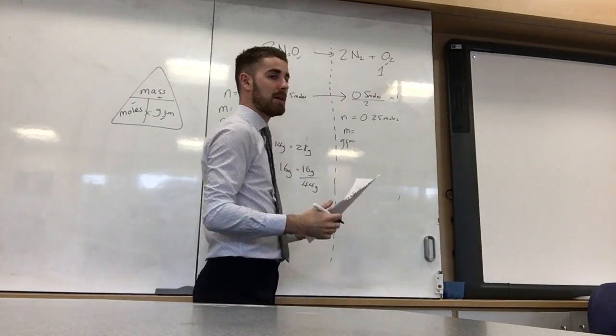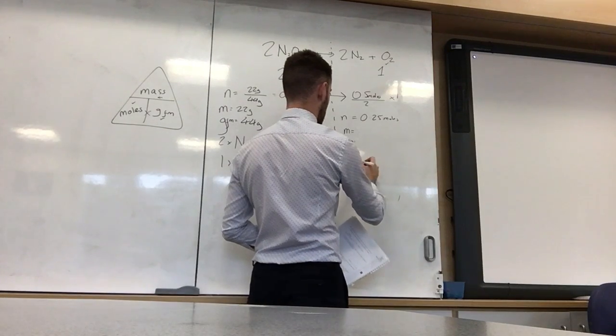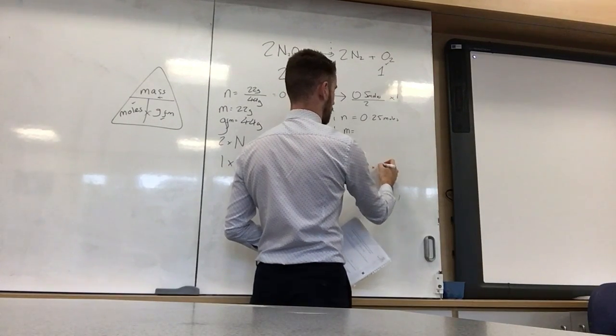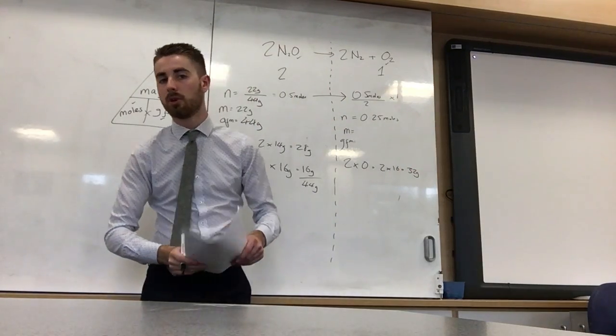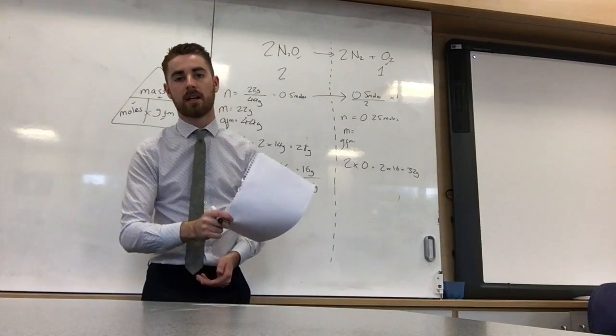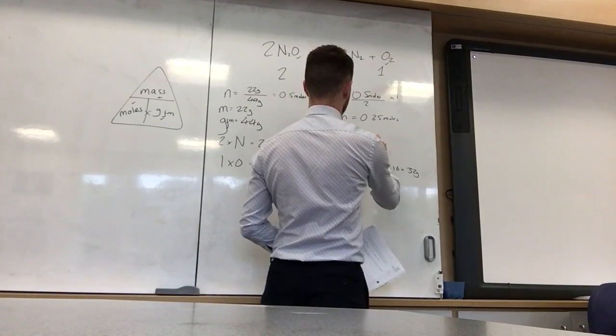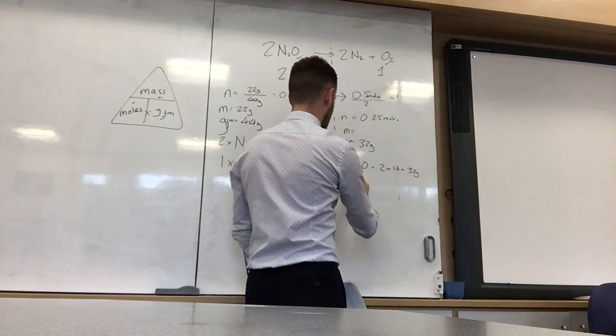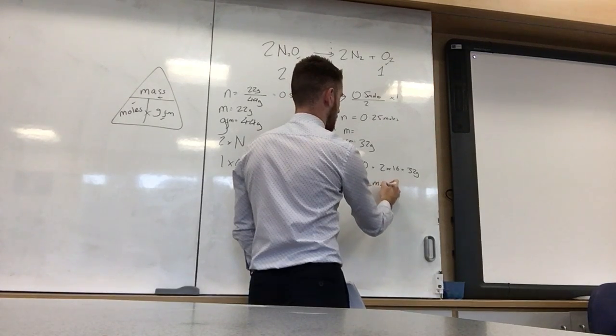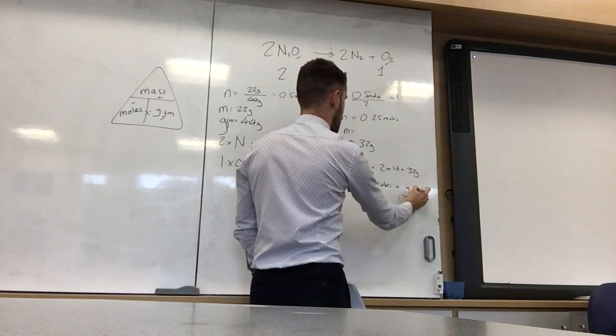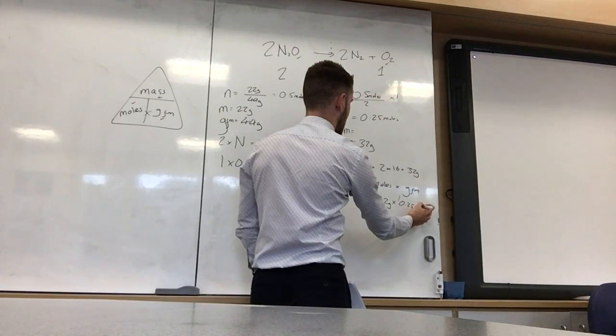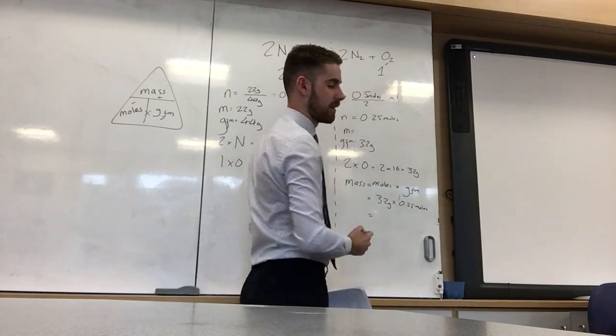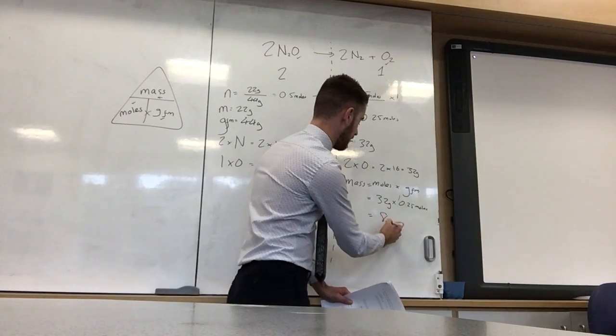So, GFM, gram formula mass of oxygen, it's just 2 times oxygen, which is 2 times 16. It's 32 grams. Why do you do 2 times 16? Because it dies on it. So that's 32 grams times 0.25 moles, which gives us a total mass of 8 grams.